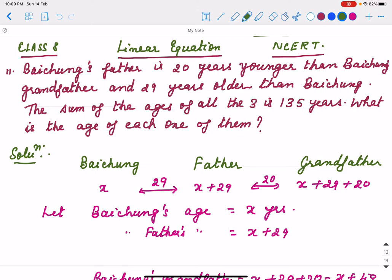Baichung's father is 20 years younger than Baichung's grandfather and 29 years older than Baichung. The sum of ages of all three is 135 years. What is the age of each one of them?